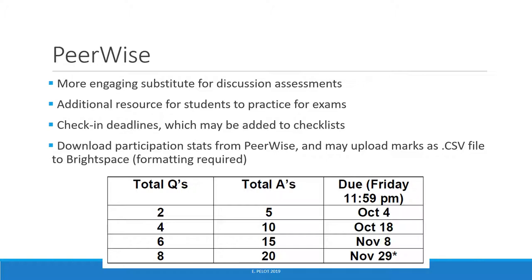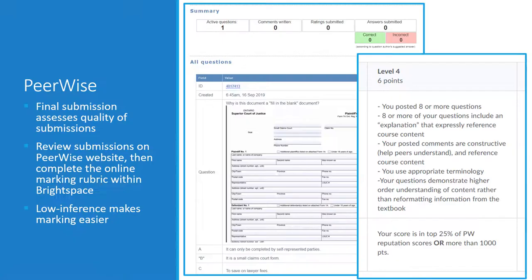I then upload the revised CSV file to Brightspace. The final PeerWise submission is assessed for overall quality. The rubric extract here shows the highest level of performance; there are other levels of performance in the rubric in addition to points for the check-ins.